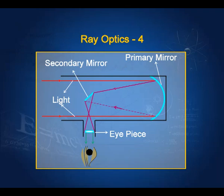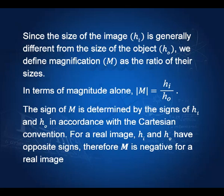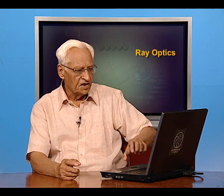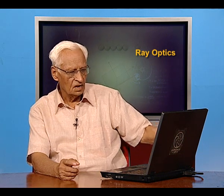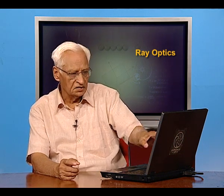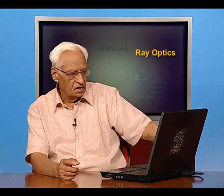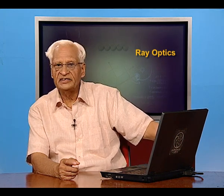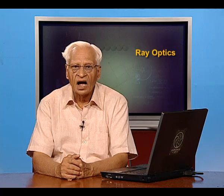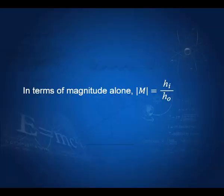Continuing, we noted in the examples from the last lecture that the sizes of images are different from the size of the object. Therefore, we define a quantity called magnification. The magnitude of magnification is the ratio of the height of the image divided by the height of the object: h_i by h_o.